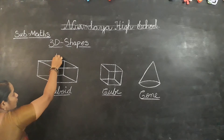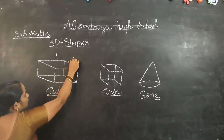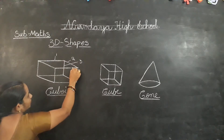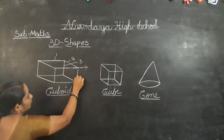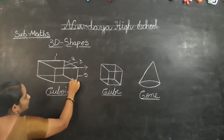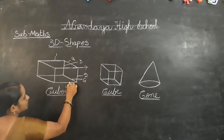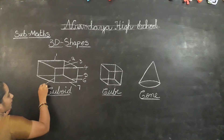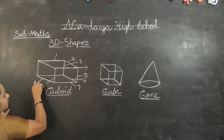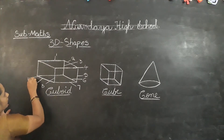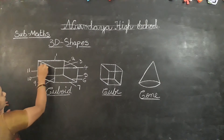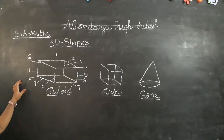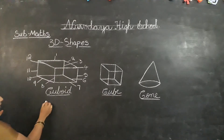Now count here how many edges are in a cuboid: 1, 2, 3, 4, 5, 6, 7, 8, 9, 10, 11, and 12. How many edges in a cuboid? 12 edges.